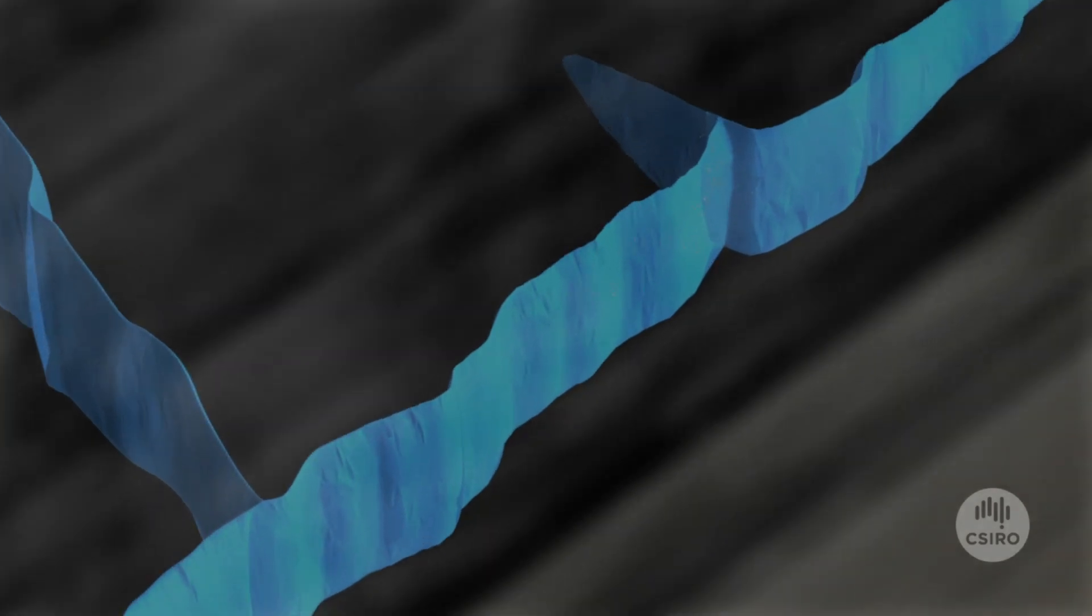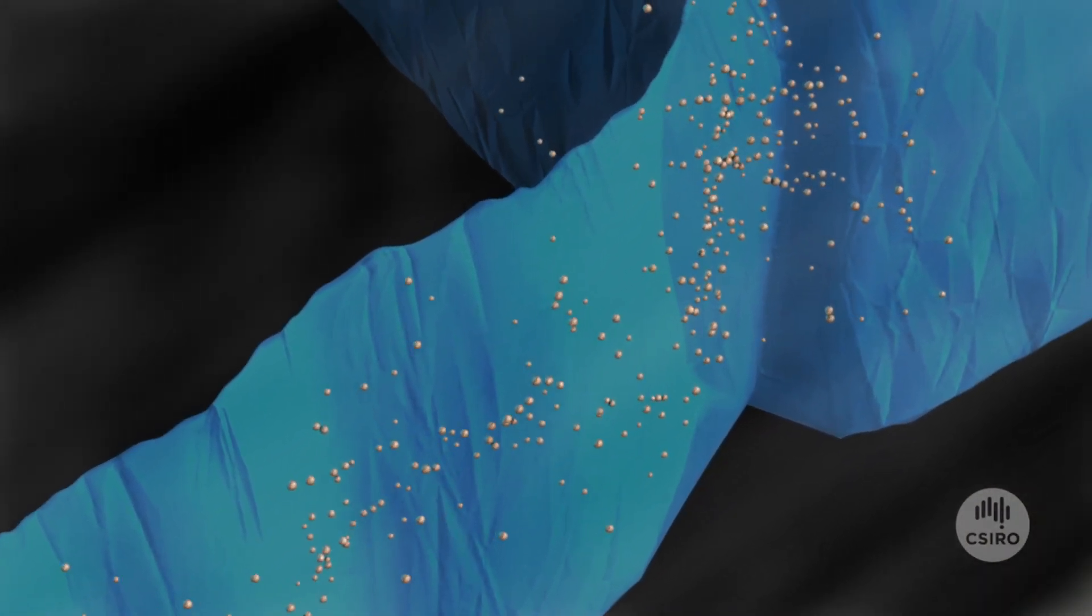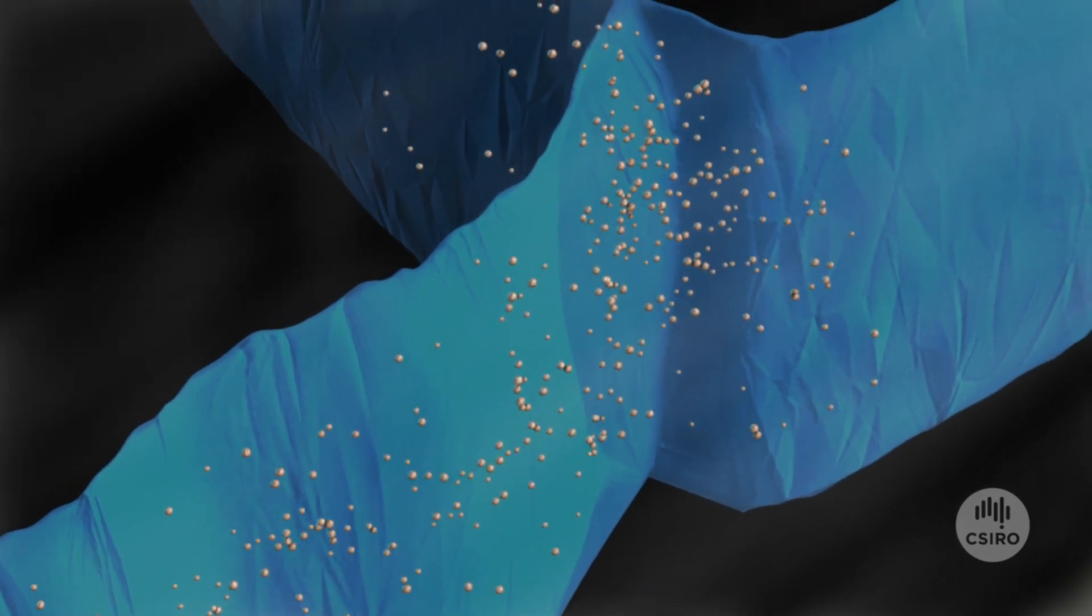Propant such as sand is then added to the water that flows through to the fractures. The sand keeps the cracks open, allowing the gas to flow to the well and up to the surface.